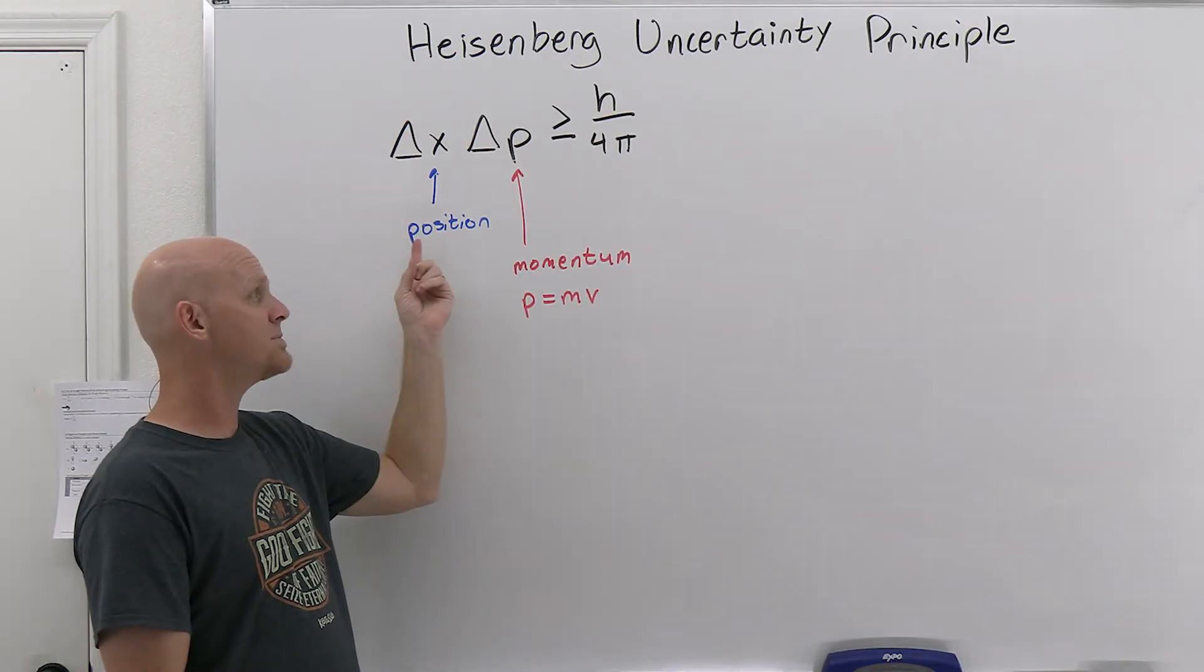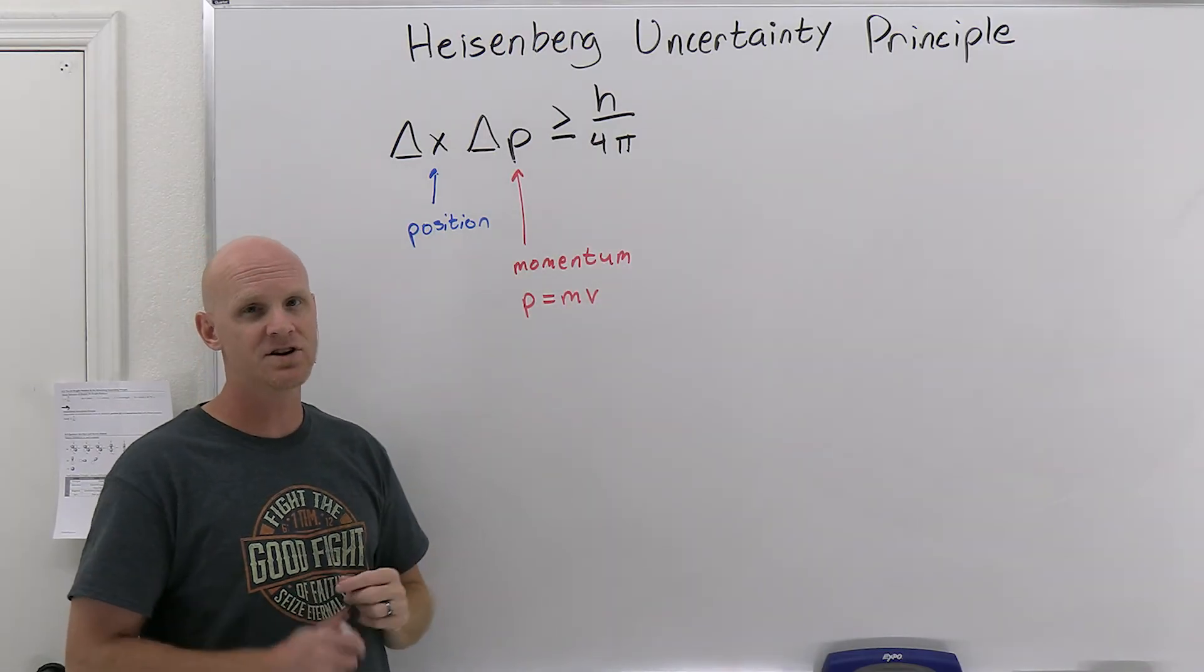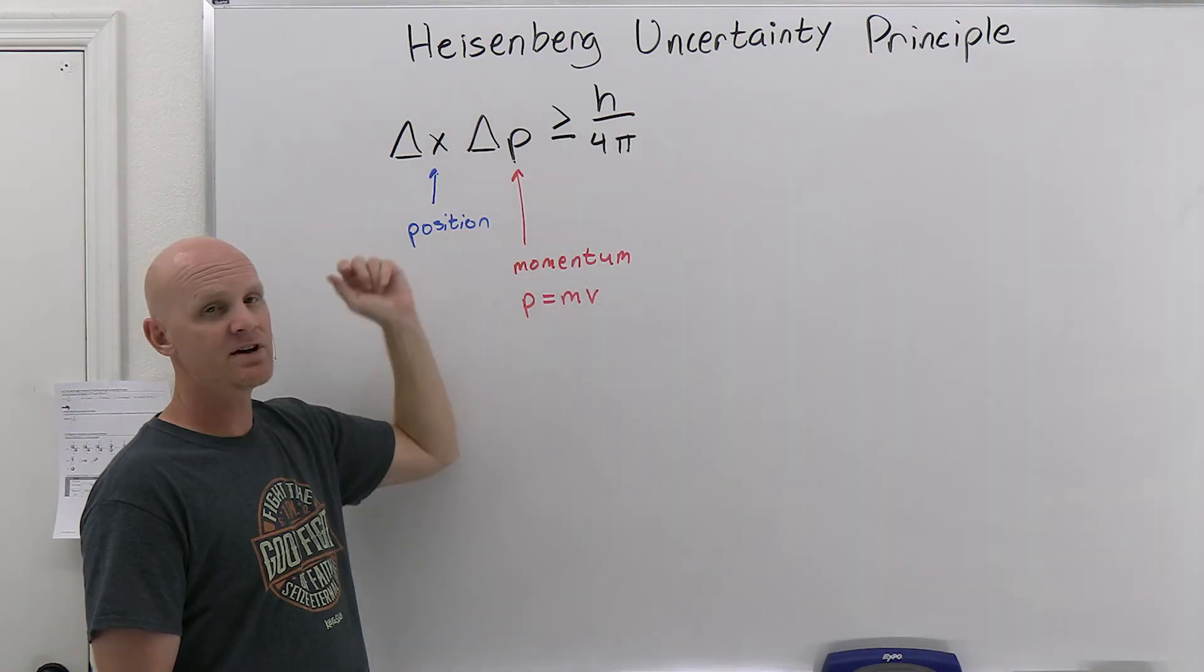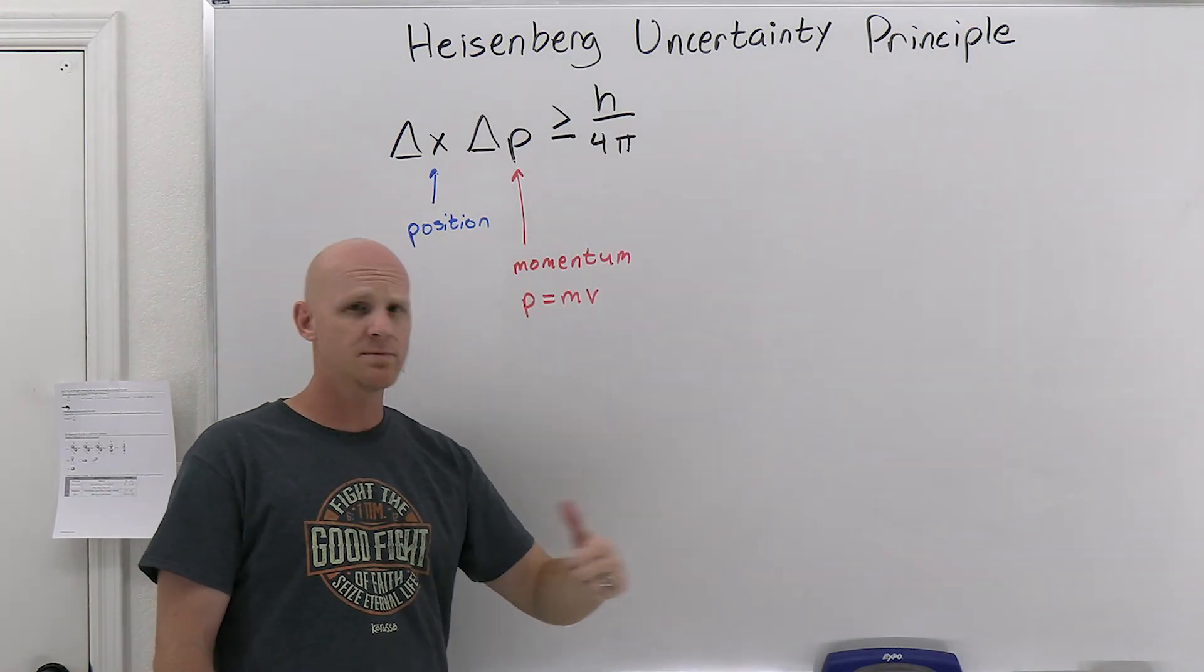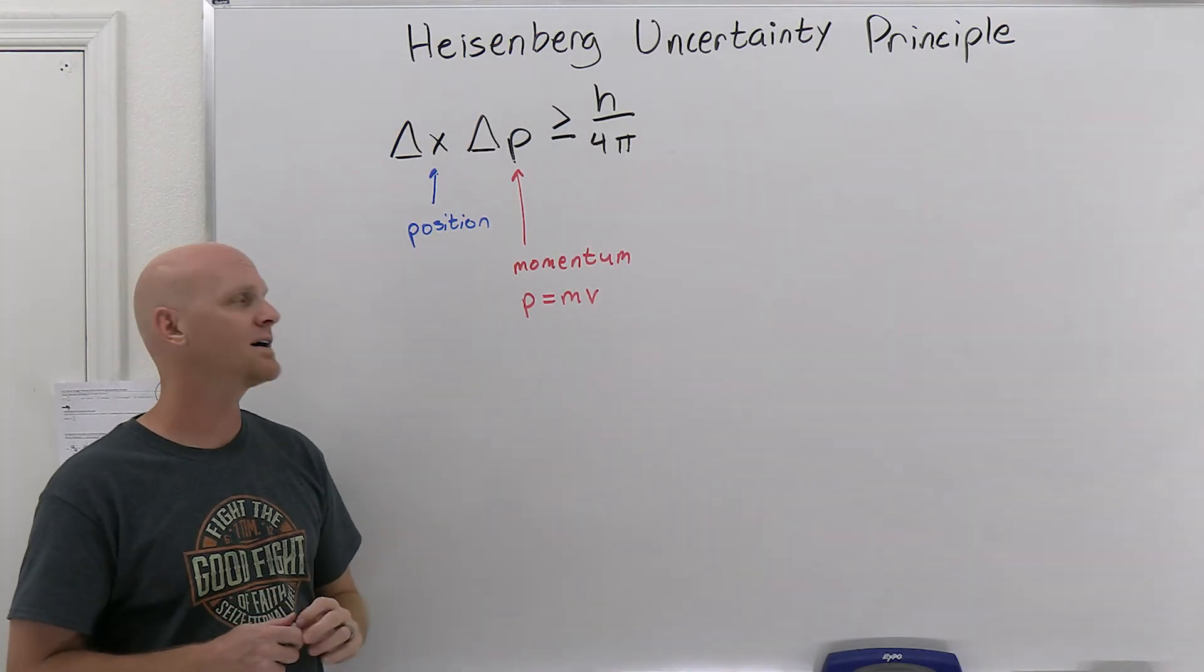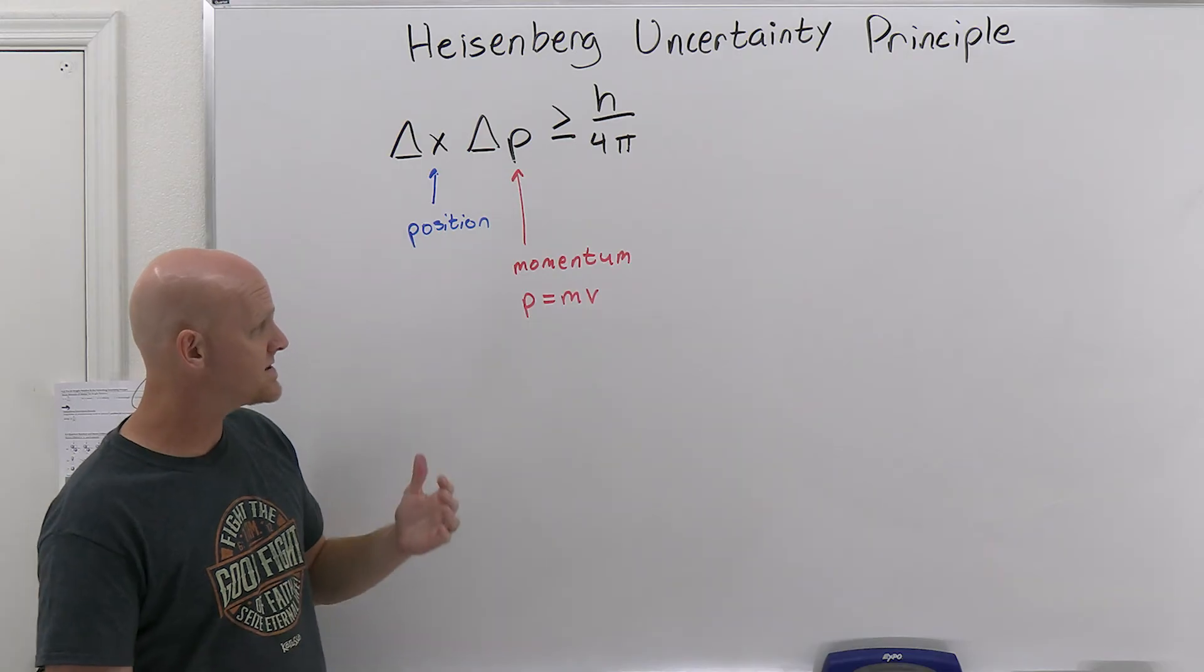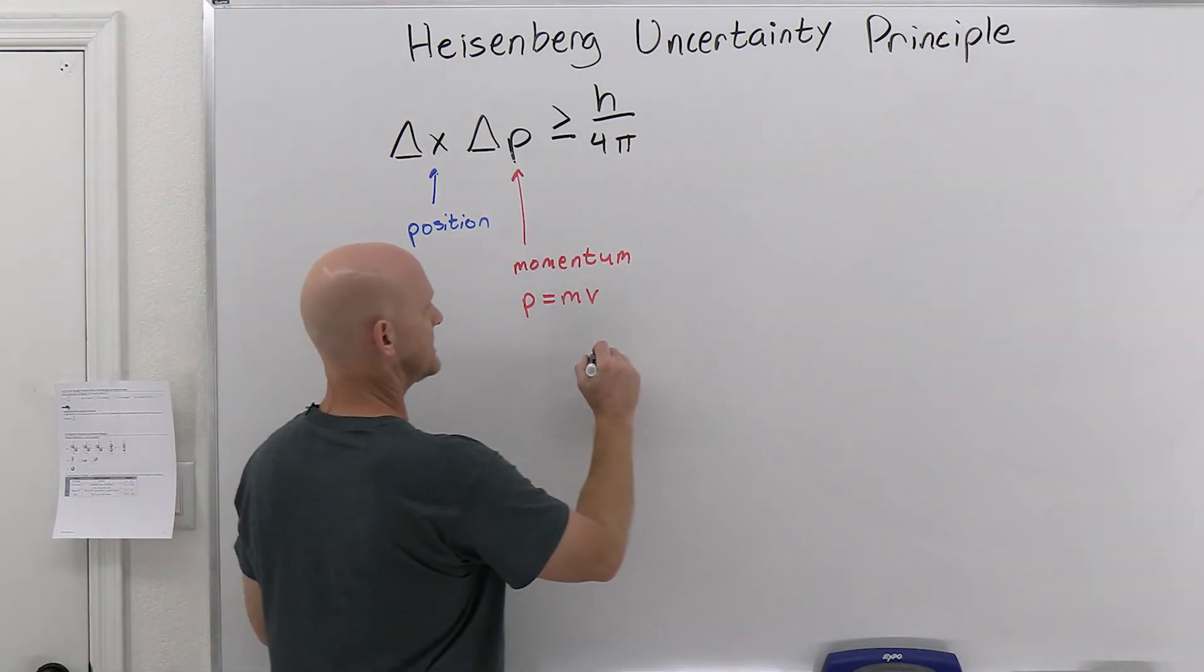And then again, the keywords here are position and momentum. And maybe you've got to do some basic calculation here, and you might be given, you know, either the uncertainty in the position or the uncertainty in the momentum and say, what is the minimum uncertainty in the other one or something like that? It would just be a very, you know, basic plug and chug kind of situation. So sometimes instead of giving you the momentum itself, they give you the velocity.